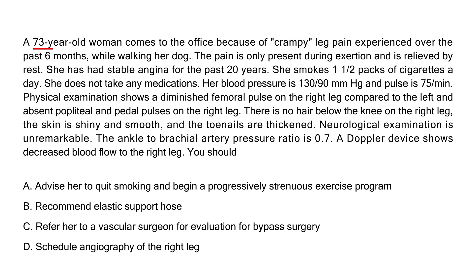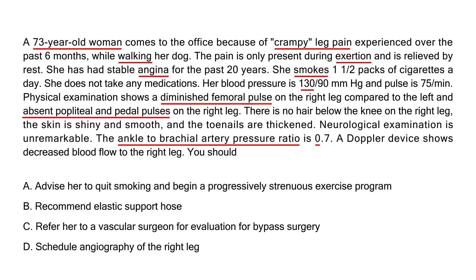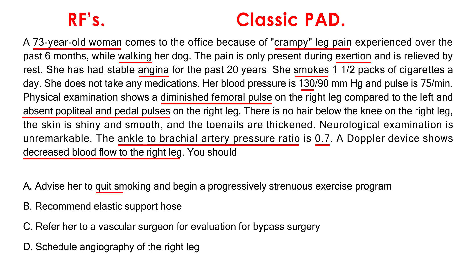Clinical vignette 1: A 73-year-old woman presents with crampy leg pain over the past six months while walking her dog; pain is only present during exertion and relieved at rest. She has stable angina, smokes 1.5 packs per day, and is on no meds. Exam shows diminished femoral pulse on the right, absent popliteal and pedal pulses on the right, no hair below the knee, shiny skin, and thickened toenails. ABI is 0.7 and Doppler shows decreased flow to the right leg. This is classic PAD — the first step is to modify her risk factors, specifically smoking cessation, and advise her to start exercising.